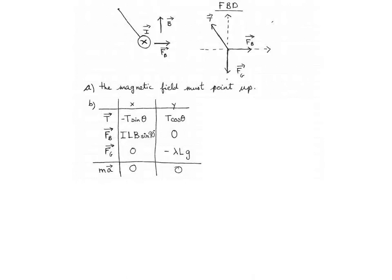So the tension has a negative x component and a positive y component. The x component is minus T sine theta, where theta is the 10 degree angle from the vertical at which the wire is hanging. The y component of the tension is T cosine theta.